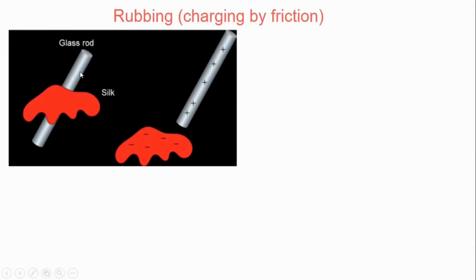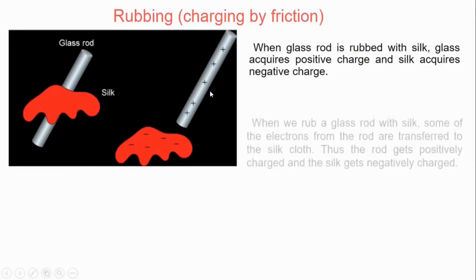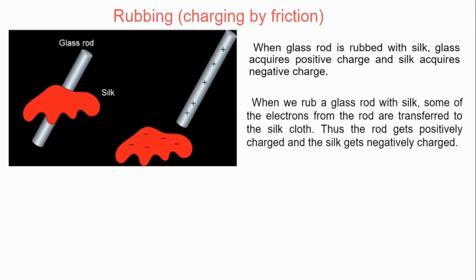First we will look at rubbing, which is basically charging by friction. In rubbing, we take one glass rod and one silk cloth. When these two things are rubbed against each other — they are in physical contact and rubbing against each other — the glass rod will become positively charged and the silk cloth will become negatively charged. Why does the glass rod become positively charged? Because the rod transfers some of its electrons to the silk cloth. Whenever electrons are transferred from the glass rod to the silk cloth, it becomes positively charged, and the silk cloth gets negatively charged because it gains electrons from the rod.